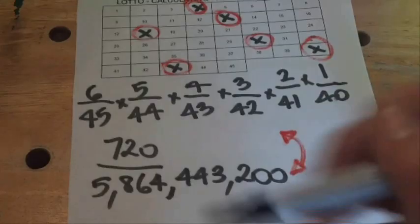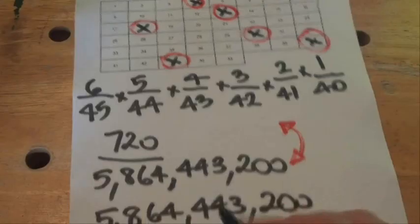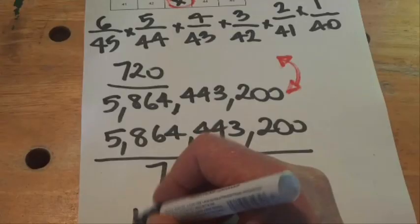We divide 5.8 billion by 720, and that gives us a figure of 8.1 million.